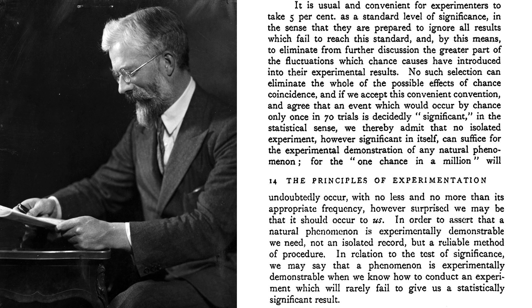So he writes, And if we accept this convenient convention and agree that an event which would occur by chance only once in 70 trials is decidedly significant in the statistical sense, we thereby admit that no isolated experiment, however significant in itself, can suffice for the experimental demonstration of any natural phenomenon. For the one chance in a million will undoubtedly occur with no less and no more than its appropriate frequency, however surprised we may be that it should occur to us. So he's basically saying that we'll always observe flukes in single studies. This possibility always exists, and this is why we need to make repeated observations, and do experiments multiple times.